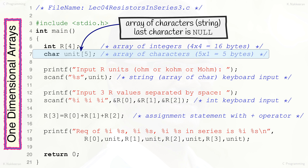A single character needs one byte of RAM memory, so the character array 'unit' with five elements will have five bytes of memory in total. The array of characters is accessible either as a string using the array name 'unit', or as individual character elements unit[0], unit[1], unit[2], unit[3], and unit[4]. As the array of characters is the only array type that can be handled as a whole quantity called a string, we need the null termination character to finalize the end of the string.